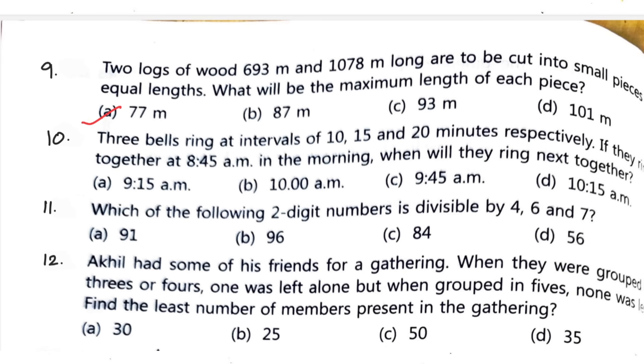Question number 10: three bells ring at interval of 10, 15 and 20 minutes respectively. If they ring together at 8:45 AM in the morning, when will they ring next together? Correct option is option C, 9:45 AM. Question number 11: which of the following two-digit number is divisible by 4, 6 and 7? Correct option is option C, 84.